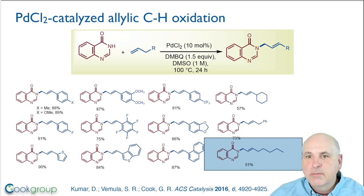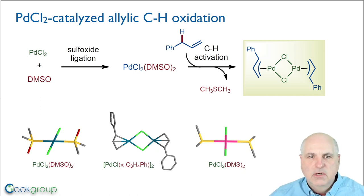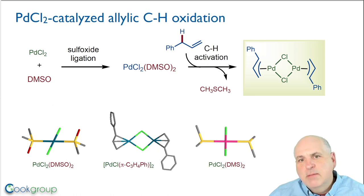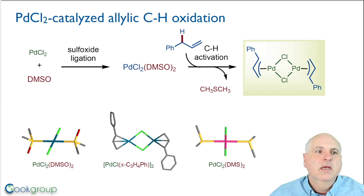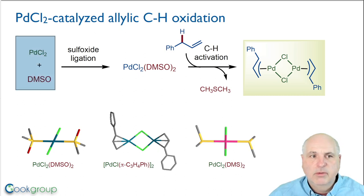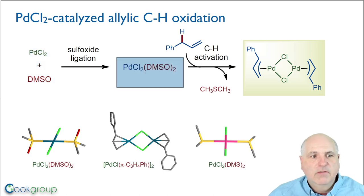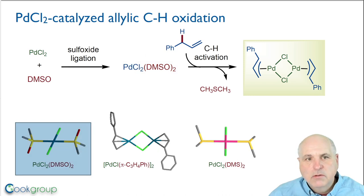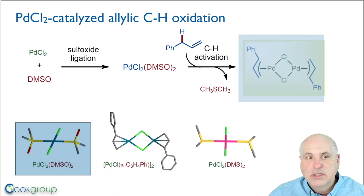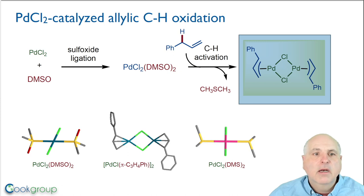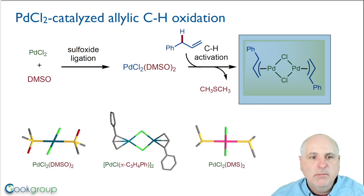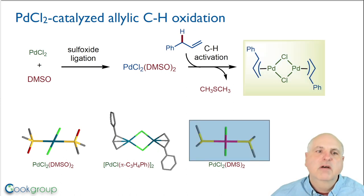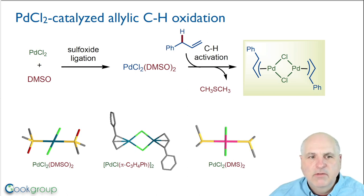We took a closer look at the formation of the π-allylpalladium complex utilizing this PdCl₂/DMSO method. We speculate that dimethyl sulfoxide is important for that process in the absence of acetates. When we mixed palladium chloride and DMSO we observed formation of a palladium chloride–DMSO complex, as you can see from this crystal structure. When we treated that with terminal olefins we were able to form the π-allylpalladium chloride dimers through C-H activation of the allylic C-H bond. One of the byproducts isolated was the palladium dichloride–dimethyl sulfide complex, which we think may be produced by reduction of DMSO. At this point it's a working hypothesis that DMSO is acting as the oxidant in this reaction.